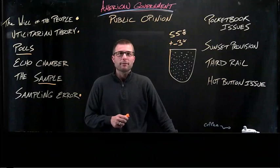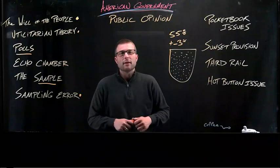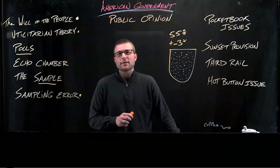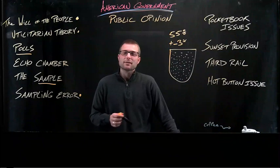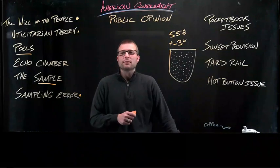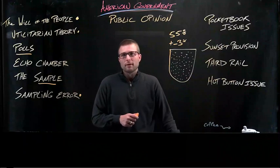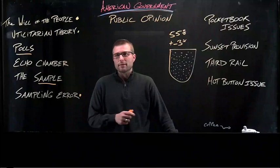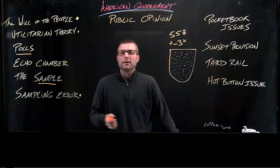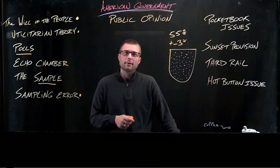Nevertheless, reputable polling firms have a solid track record. The Gallup Poll Organization, for example, has polled every presidential election since 1936. On average, the final Gallup Poll's election prediction comes within 2 percentage points of the actual result. Pollsters ask Americans a great many things. Their feelings about the president, their party identification, their opinions on issues, their religious affiliation, and so on.